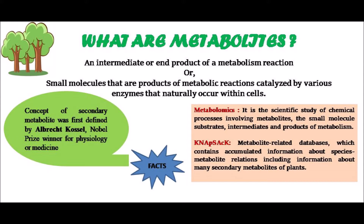Here we will have a look at a couple of terms. The first one is metabolomics — it is the scientific study of chemical processes involving the metabolites, the small substrate molecules, intermediates, and products of metabolism. Another term is KNApSAcK, which is one of the metabolite-related databases that contains accumulated information about species-metabolite relationships, including information about many secondary metabolites of plants.